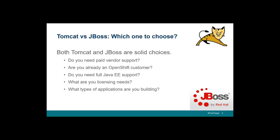So the question becomes: what do you choose — Tomcat or JBoss? If you need full Java EE support, go with JBoss. If you need reputable vendor support for your Java EE applications, go with JBoss. Also, if you're an existing JBoss customer, working with OpenShift, or moving towards Docker and Kubernetes, JBoss has updated their deployment models to integrate really well with Kubernetes and Docker, so that might also be a reason to work with Red Hat and JBoss.